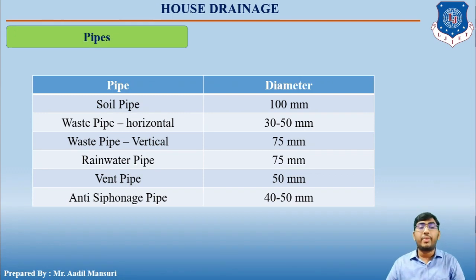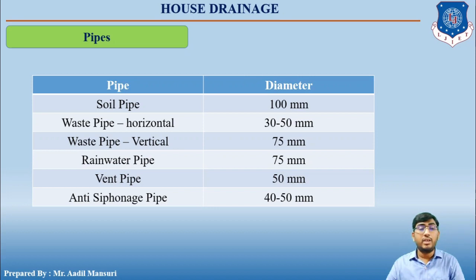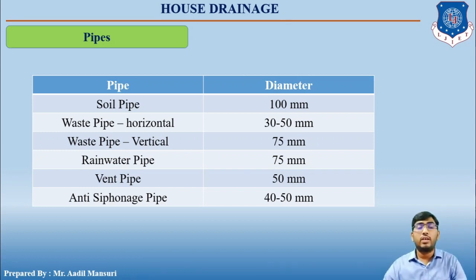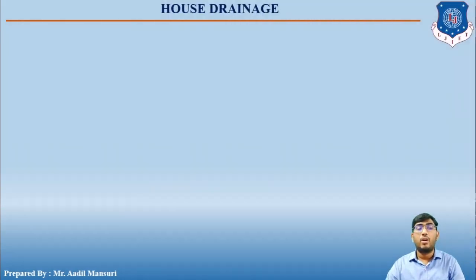Preferable pipe diameters are as follows: soil pipe — 100 mm; waste pipe — 30 to 50 mm if horizontal, 75 mm if vertical; rainwater pipe — 75 mm; vent pipe — 50 mm; and anti-siphonage pipe — 40 to 50 mm.